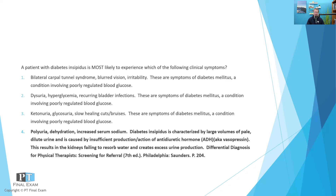The correct answer is polyuria, dehydration, and increased serum sodium. Polyuria means frequent and large quantities of urine — normal production is about one to three quarts a day, whereas someone with diabetes insipidus can produce up to 20 quarts a day. That massive output leads to dehydration. Patients also experience polydipsia — increased thirst — because they're losing so much fluid. Increased serum sodium occurs because as water is flushed out, the concentration of sodium in the bloodstream rises.